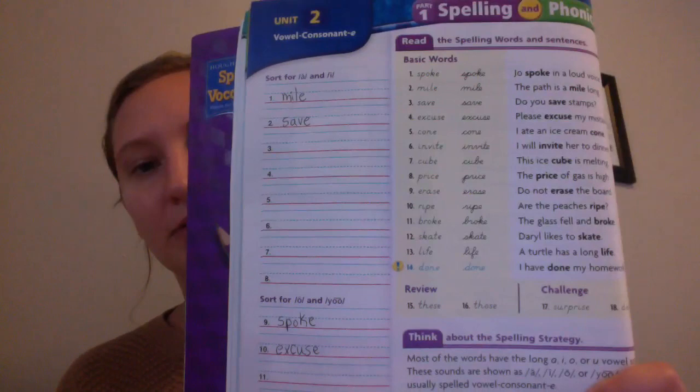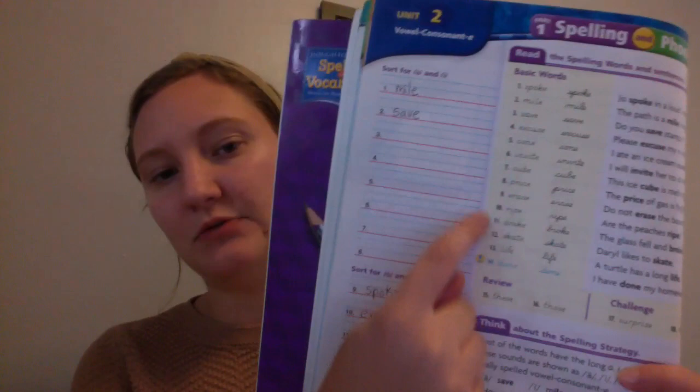We're gonna be doing this along with me, page 24. I already started writing some of them in, so we're going to be organizing our new spelling words. This is our new list. We're gonna be organizing it by the vowel sound that it makes. Remember, vowels are A, E, I, O, and U, and they can make different sounds.